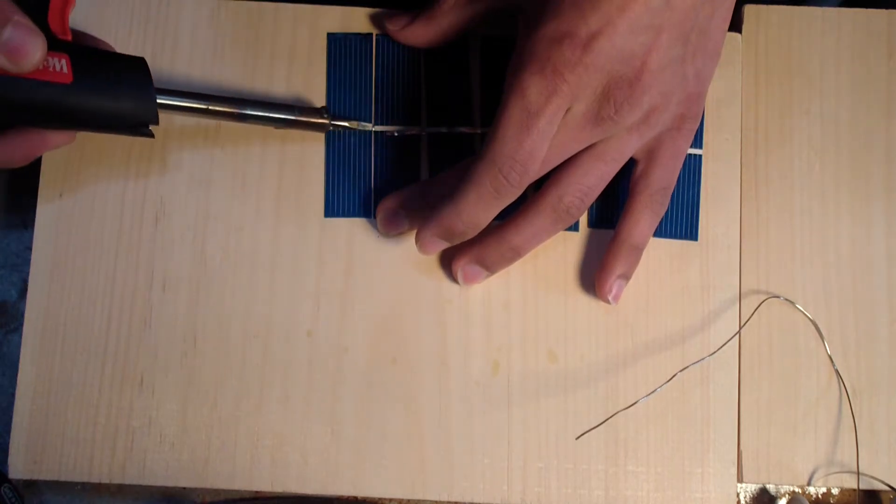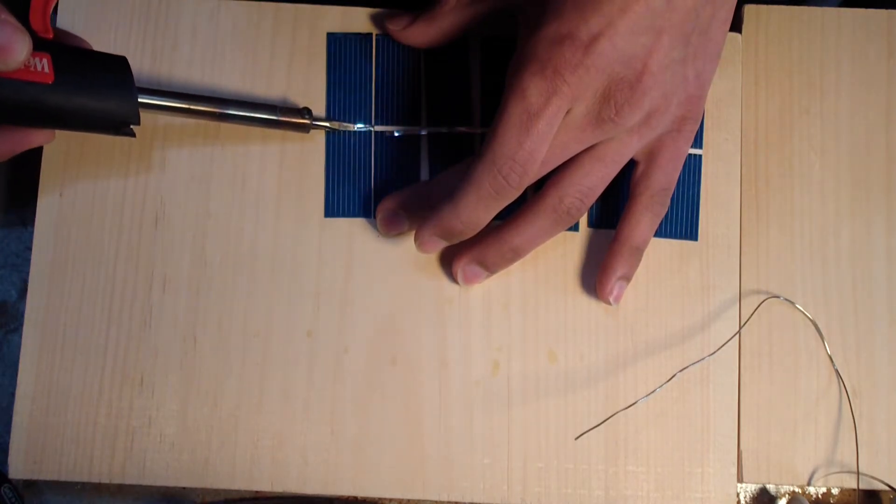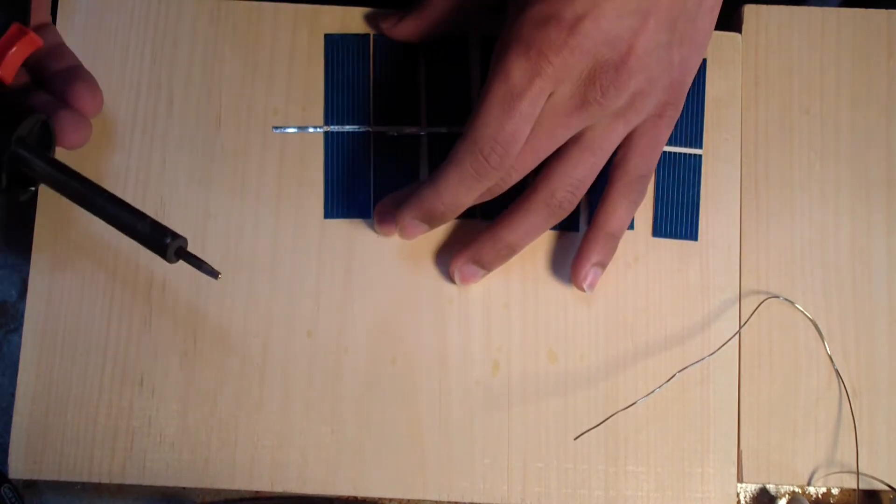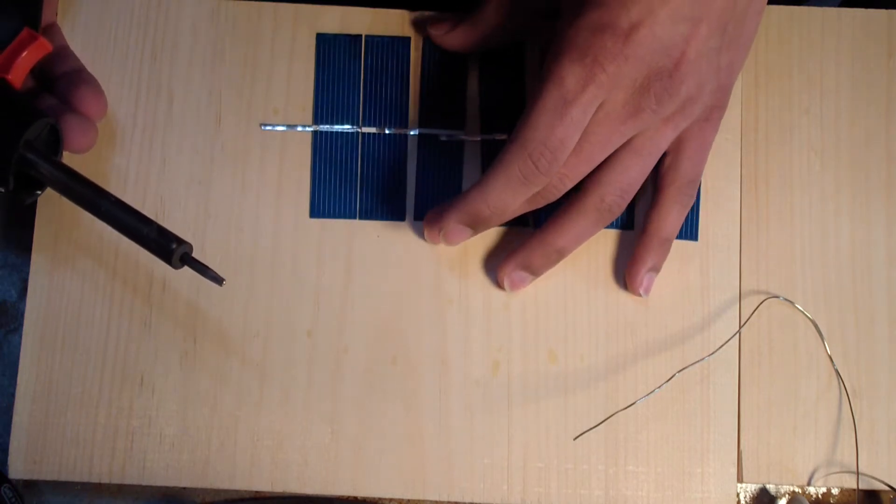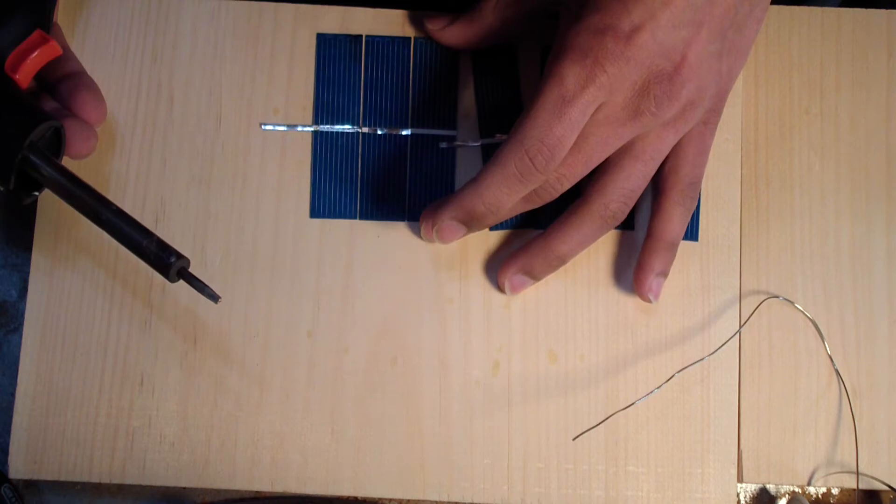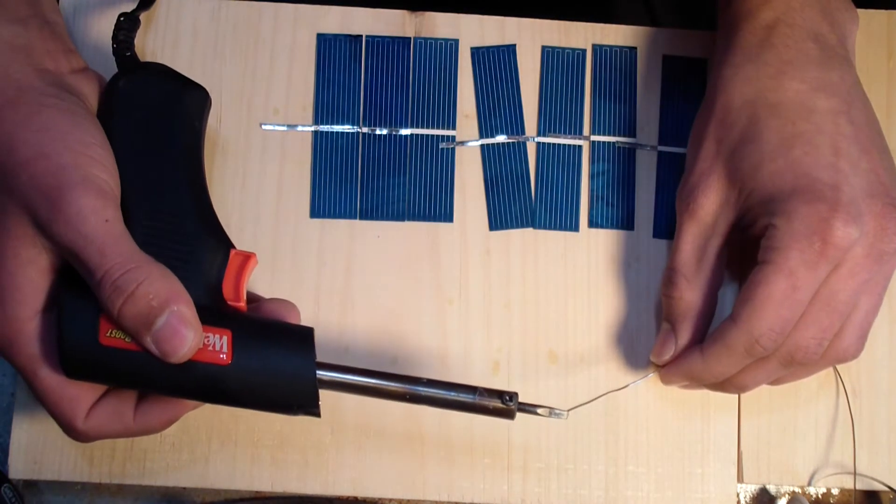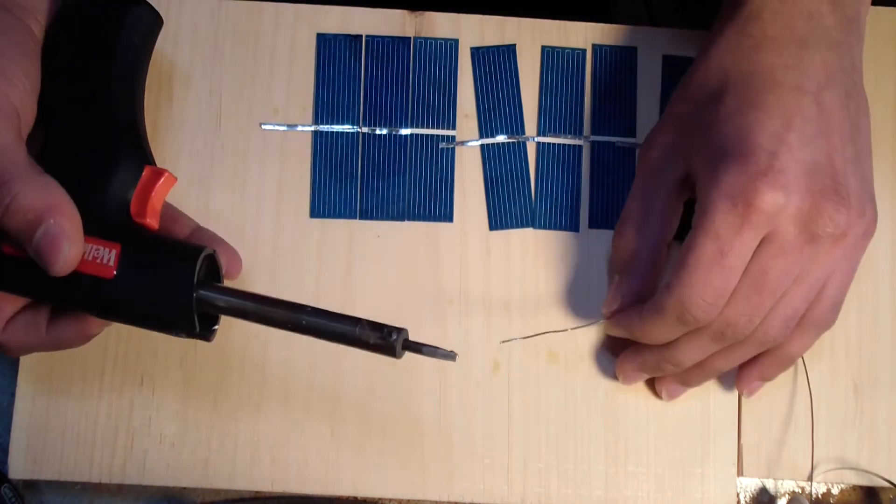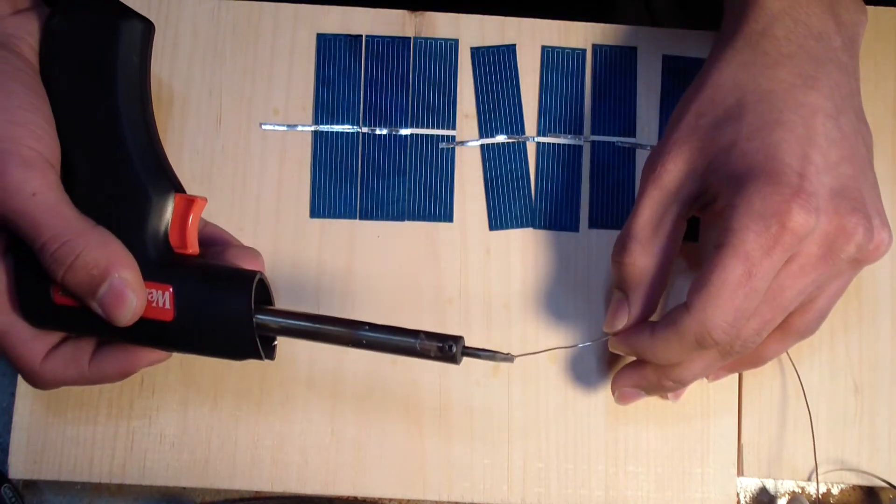This cell does not like me. There we go. That was a close one. Try not to do it more than three times like I did there. I messed up. Keep doing it too much over and over again, they will heat up. You'll probably hear that one crackle in a few minutes.